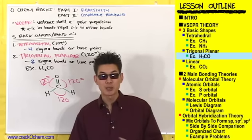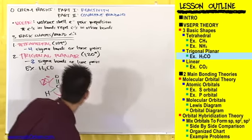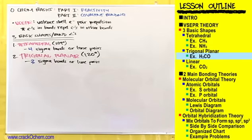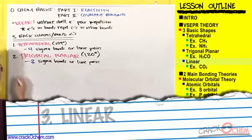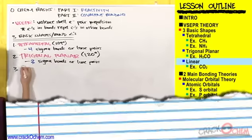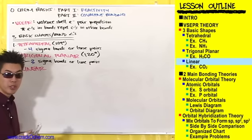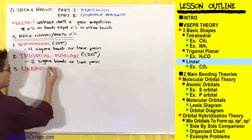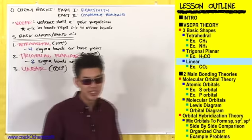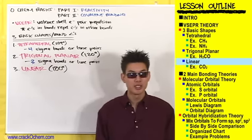The third and last basic shape a compound can be is linear. Go ahead and put in parentheses right next to this one: 180 degrees. Linear compounds have bond angles of 180 degrees.